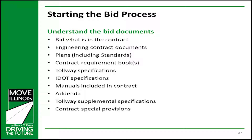As you prepare to start the bid process, it is important to understand the documents you are bidding on. Public work is different from private work in many ways. The most important thing to remember is that you must bid what is in the contract. That includes everything asked for in the contract requirement book, even if you believe there is a better or less expensive item available. Changes may be discussed after the contract is awarded.